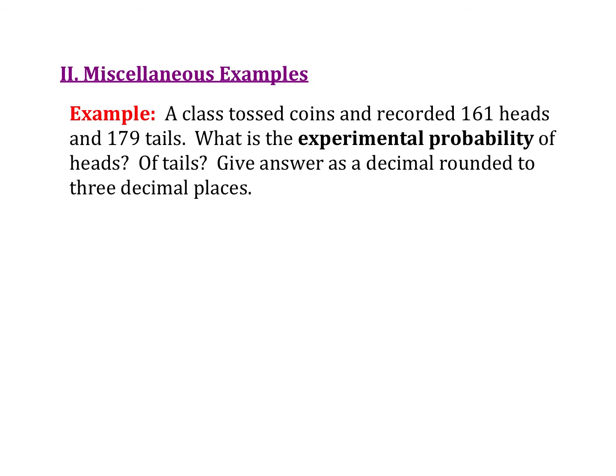Let's get some examples here. In class, we tossed coins and recorded 161 heads, 179 tails. So for heads, we have 161. For tails, we have 179. Now that means we can figure out the overall total as well. If we just add those together, we'd get 340. So if I wanted the experimental probability of getting heads or getting tails, I would write that as probability of flipping heads would be 161 out of the total 340. Similarly for tails, the probability of flipping tails would be 179 over that 340.